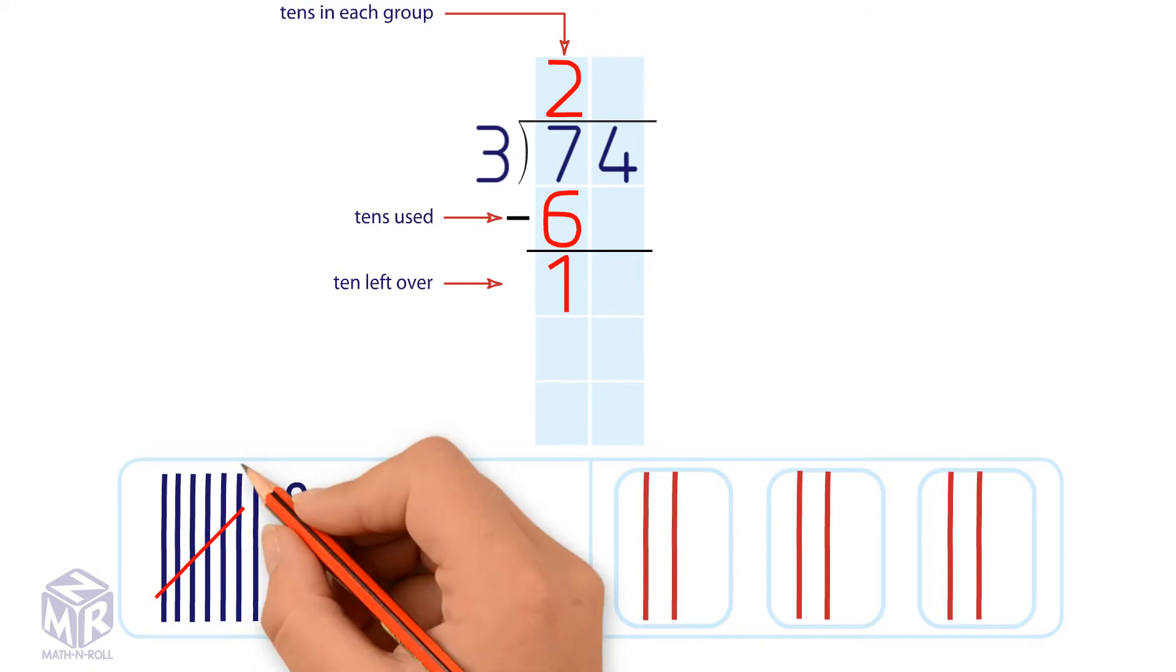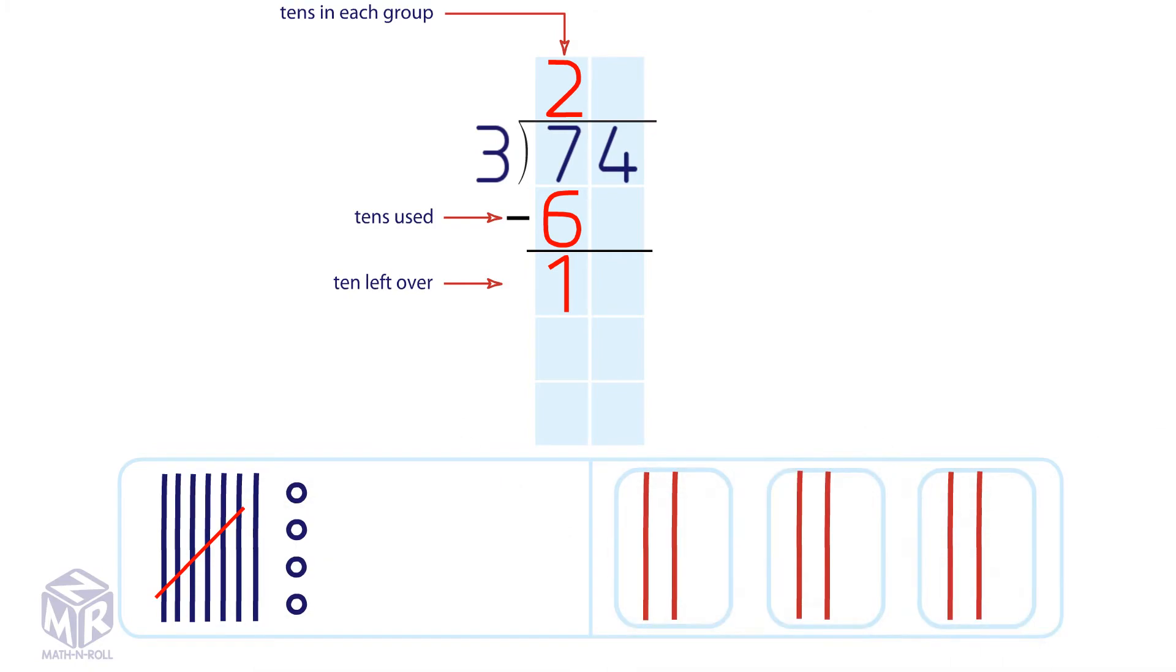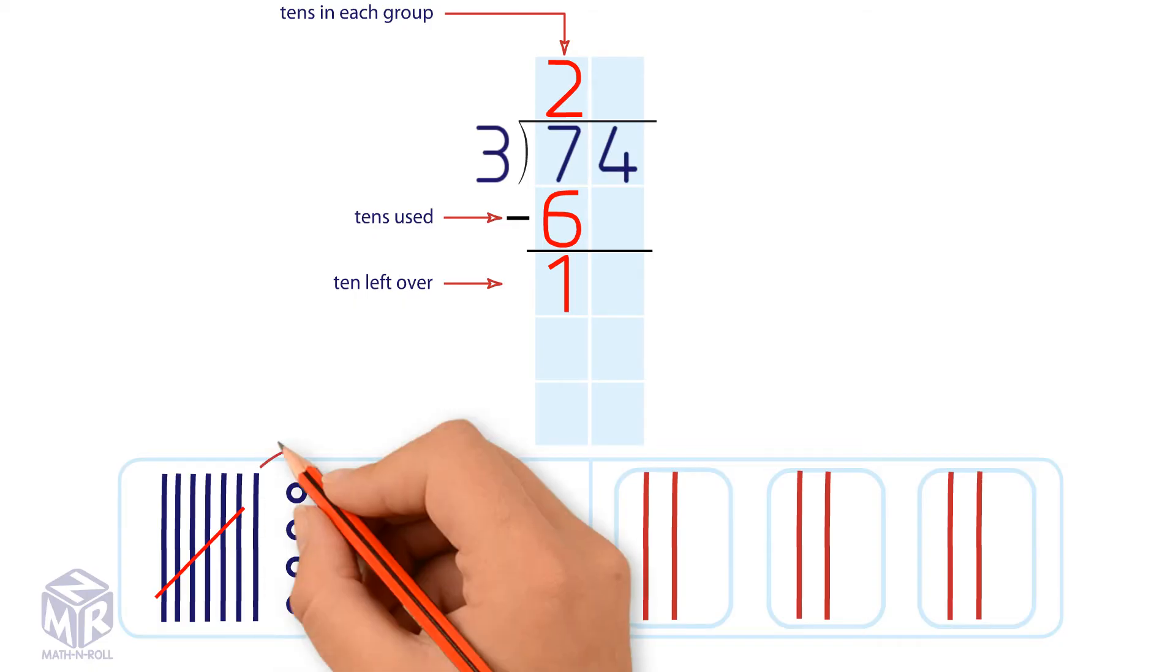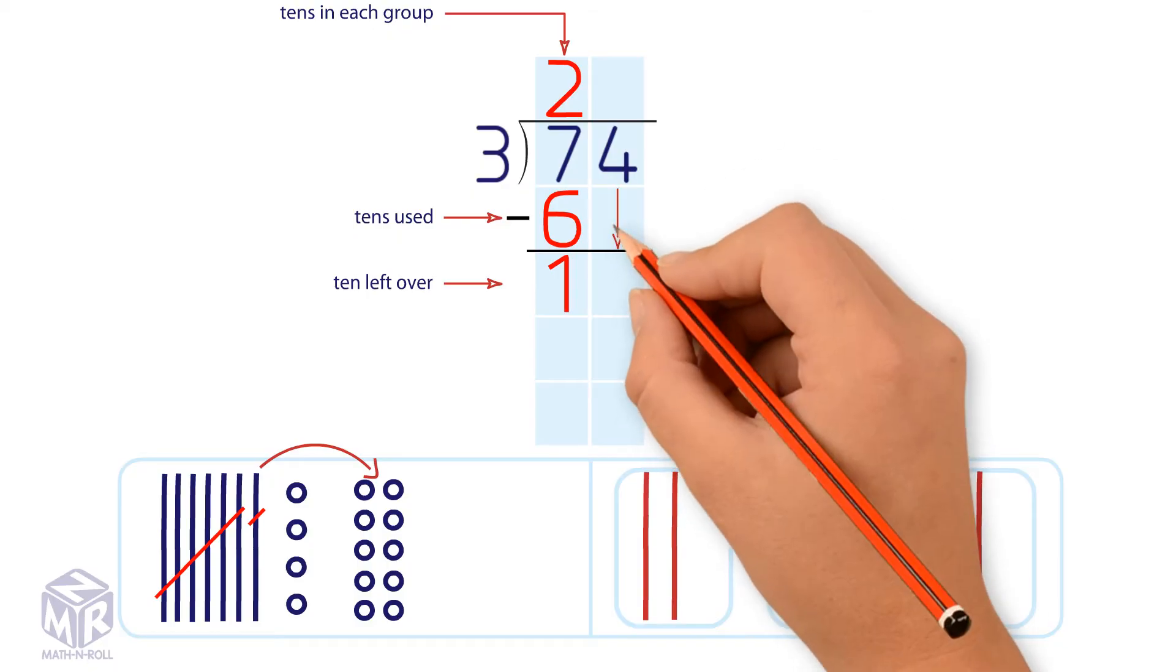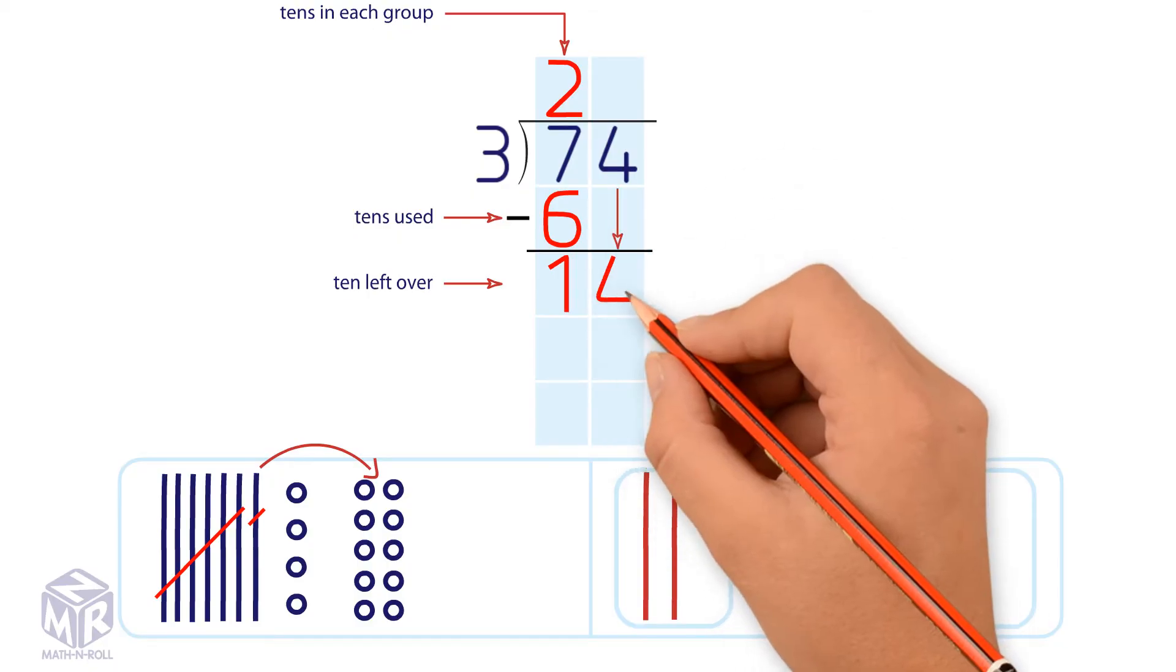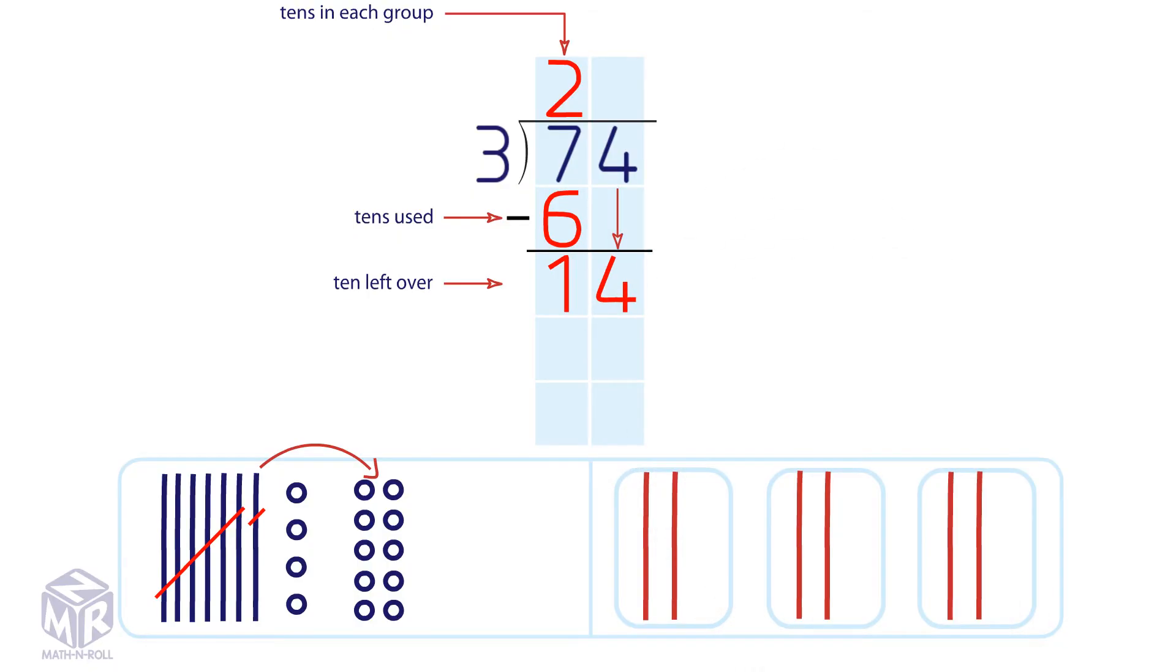One 10 cannot be shared among 3 groups without regrouping. So we regroup one 10 by drawing 10 ones. Cross out the 10 and bring down the 4. Now we have 14 ones to share.